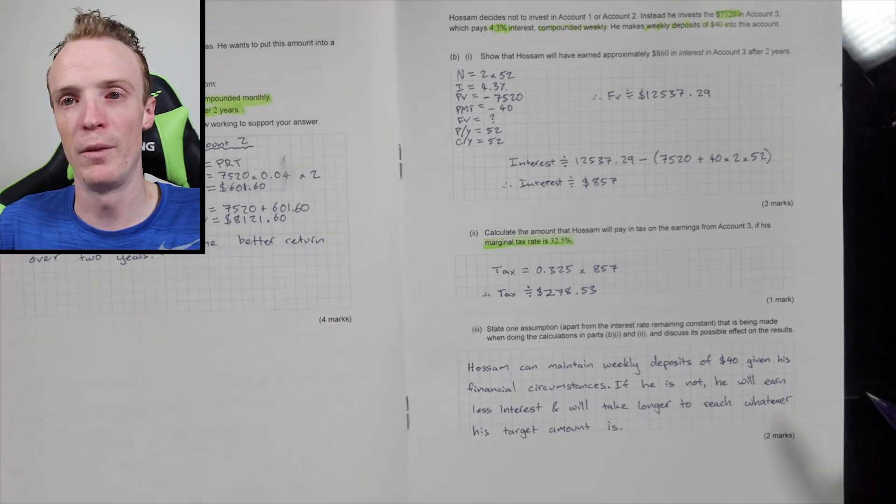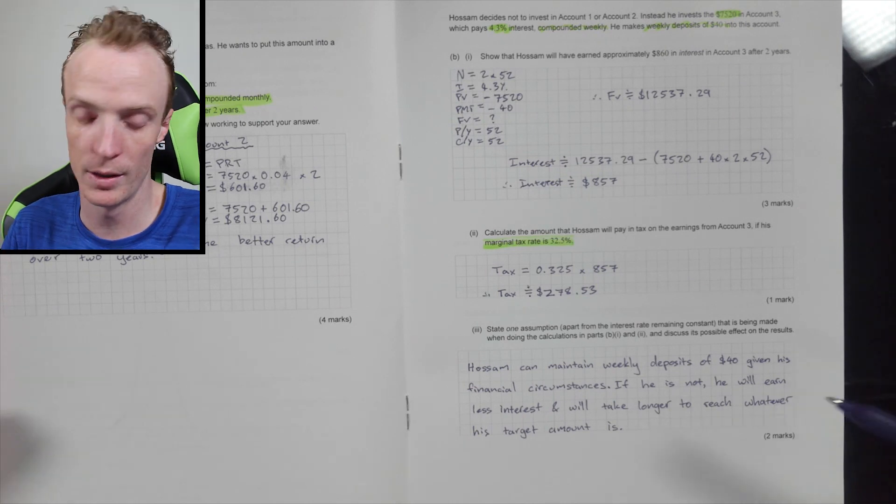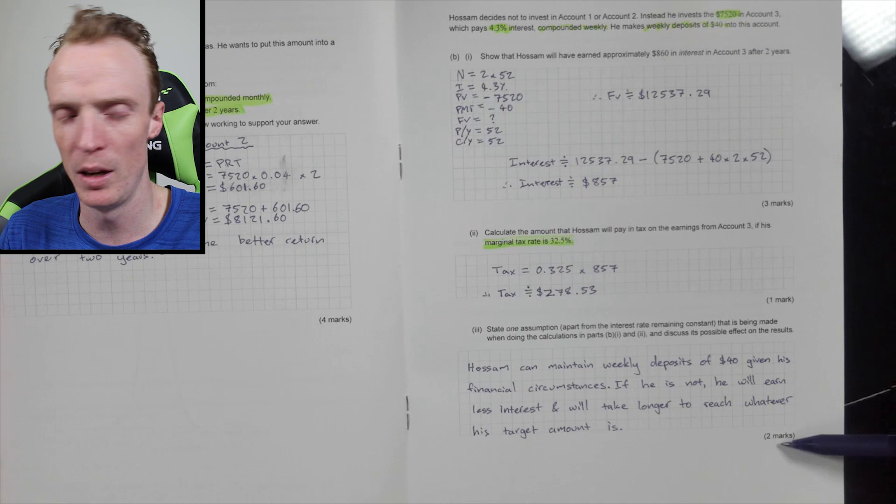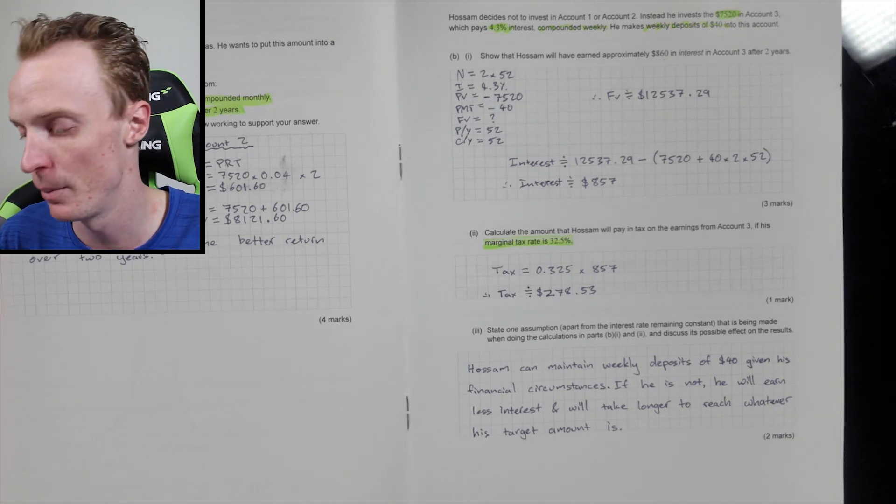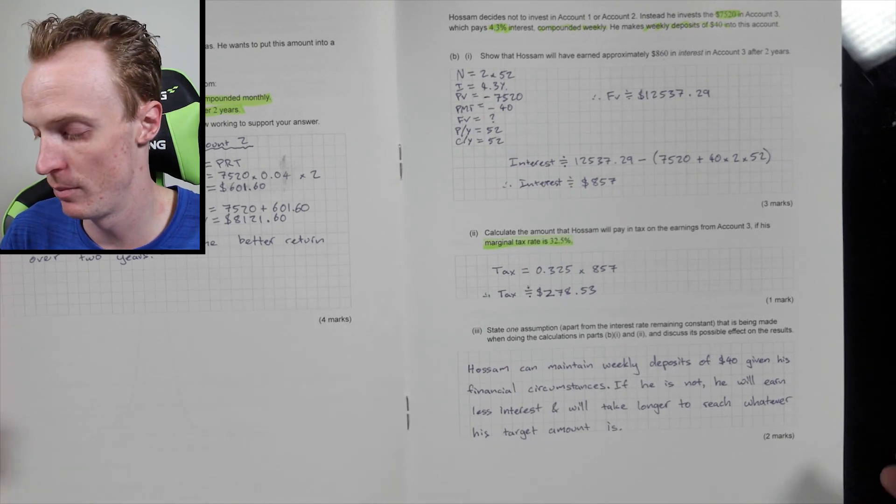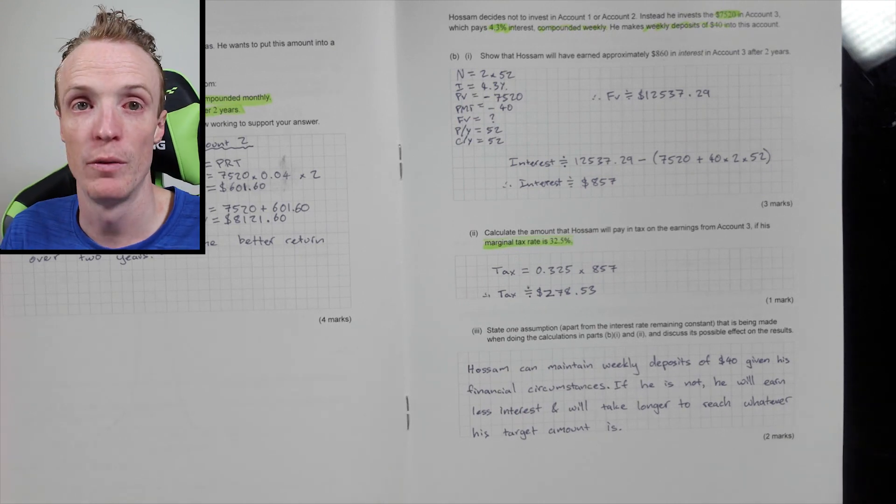So you can see here, I'm giving a two-step answer. This is saying what one of the assumptions are. There are more than one. But the second big kicker for the mark is being specific about well, what is the actual effect of this assumption? Which is looking at, okay, what if it, if he can't maintain it, what's going to happen? All right. So that's question five.